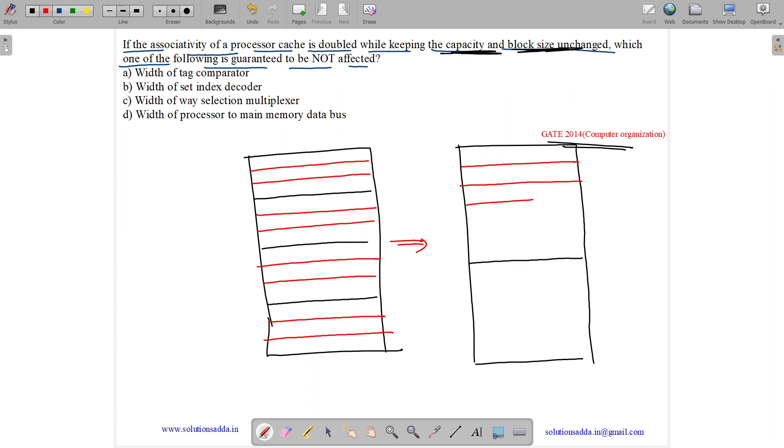So we will have one, two, three, four, five blocks over here and one, two, three, four, five, six blocks over here. So initially this was set zero, set one, set two, set three. Now this is set zero dash and set one dash. So these are our sets.